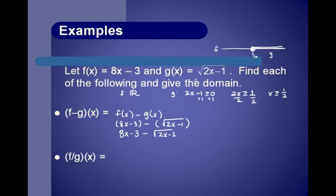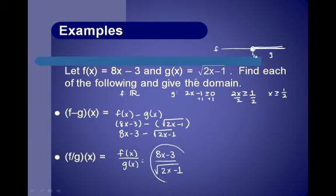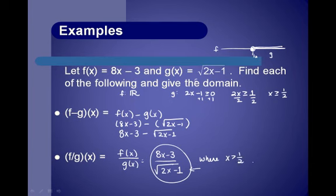For the quotient, f divided by g of x equals f of x divided by g of x, which is 8x minus 3 divided by the square root of 2x minus 1. Now for the domain: we said x must be greater than or equal to one-half, but if x equals one-half, the denominator g becomes zero. Since it's in the denominator it cannot equal zero, so the domain for the quotient is all x strictly greater than one-half.